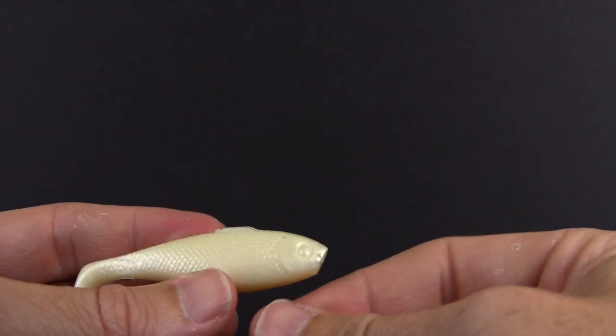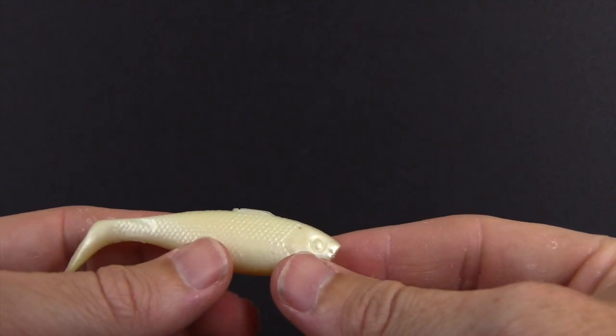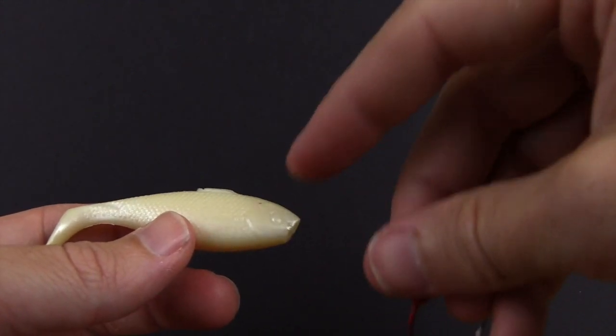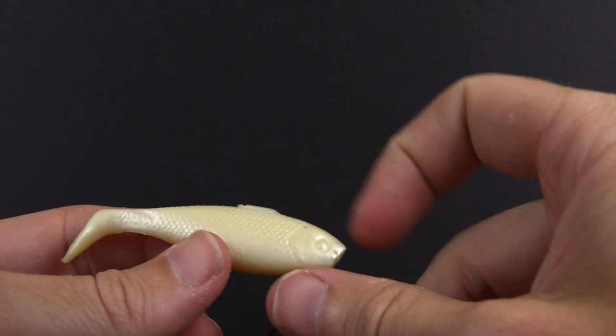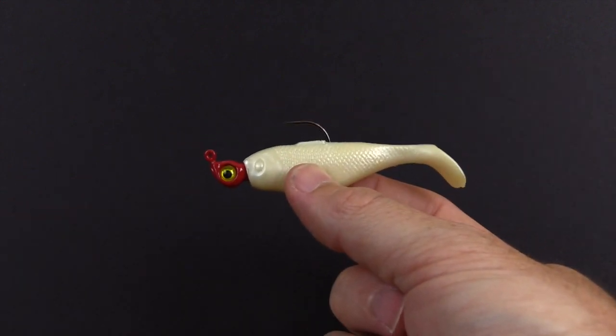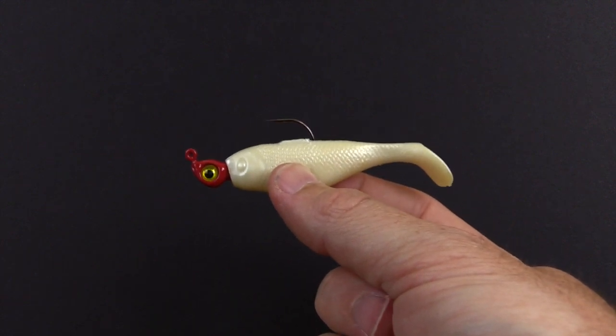As soon as it's about ready to fall off your hook where you can't catch any more fish on it, cut off the first top part, re-rig it the same exact way, and keep on catching. Here's the finished product. If you do have any questions on how to rig this, please use the comments section below.